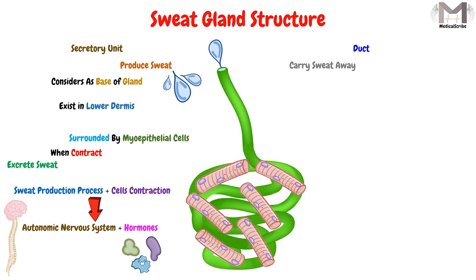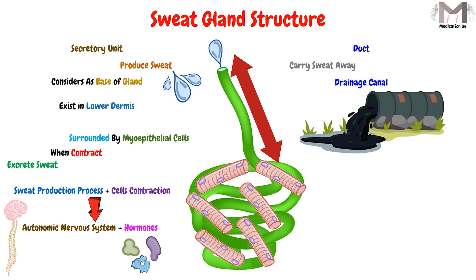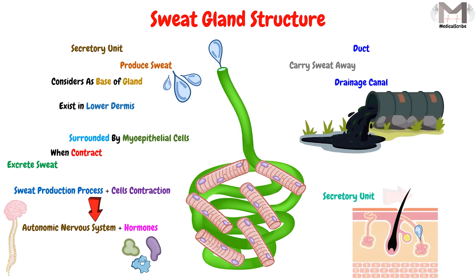The duct is the second part of the sweat gland structure. It acts as a drainage canal that carries the sweat from the secretory unit to the skin surface.